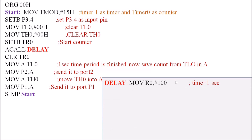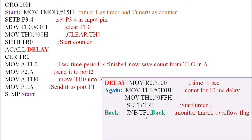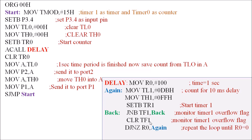In the delay subroutine: R0 is initialized with 100 to execute the 10-millisecond routine 100 times. TL1 is initialized with DBH and TH1 with FFH for a 10-millisecond delay. We set bit TR1 to start Timer 1, then check the flag bit TF1. When TF1 equals 1, the 10-millisecond delay is done — clear the flag bit and decrement R0. Repeat 100 times for a total 1-second delay, then return to the main program. This program gives us the count on ports P1 and P2, from which we calculate the frequency of the unknown signal.